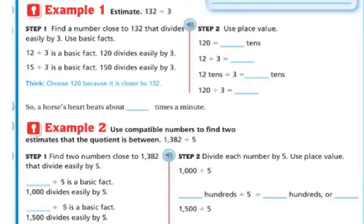Step two is to use place value like we did yesterday. So 120 is 12 tens. So now we're doing 12 divided by 3 and 12 divided by 3 is 4.